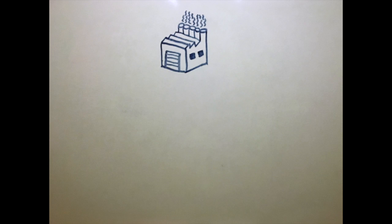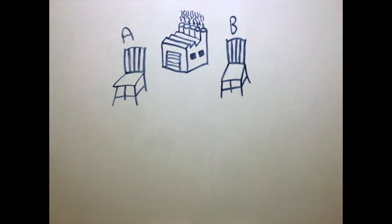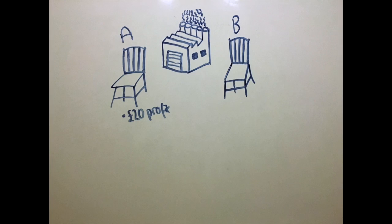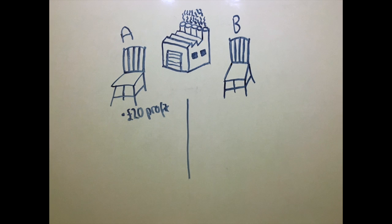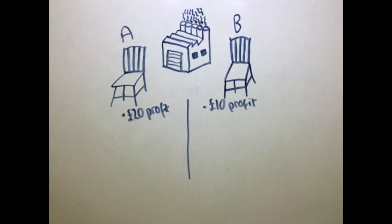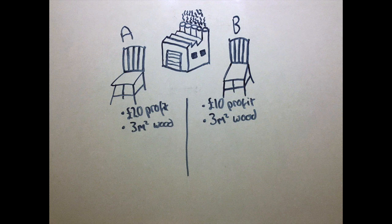A factory makes two types of chairs, type A and type B. The factory makes a profit of £20 on chairs of type A and £10 on chairs of type B. Each chair requires 3m² of wood to produce.